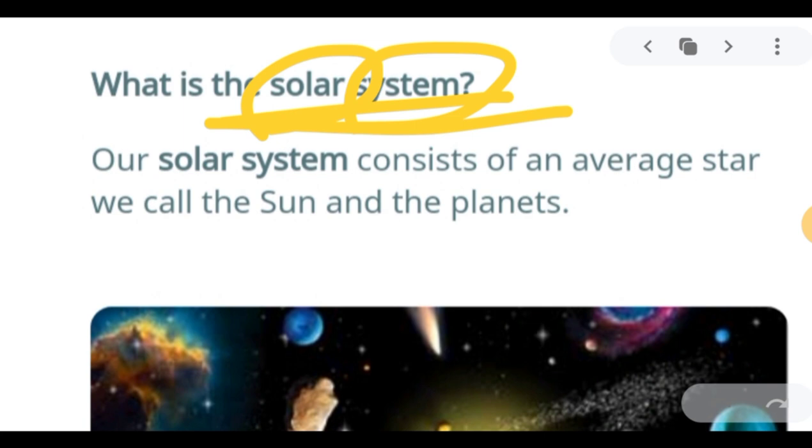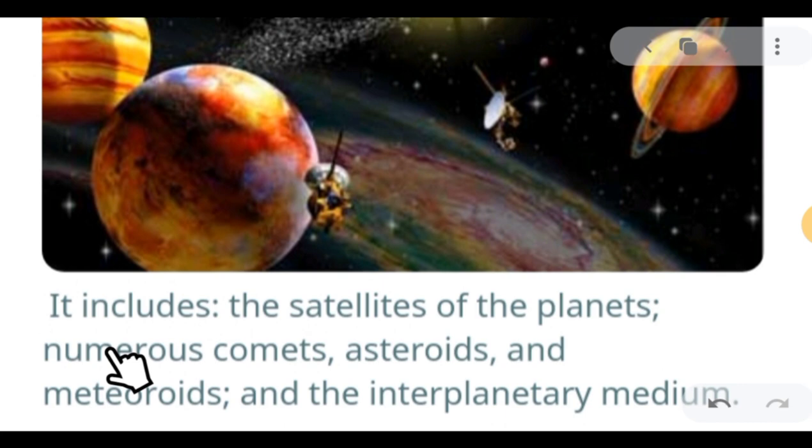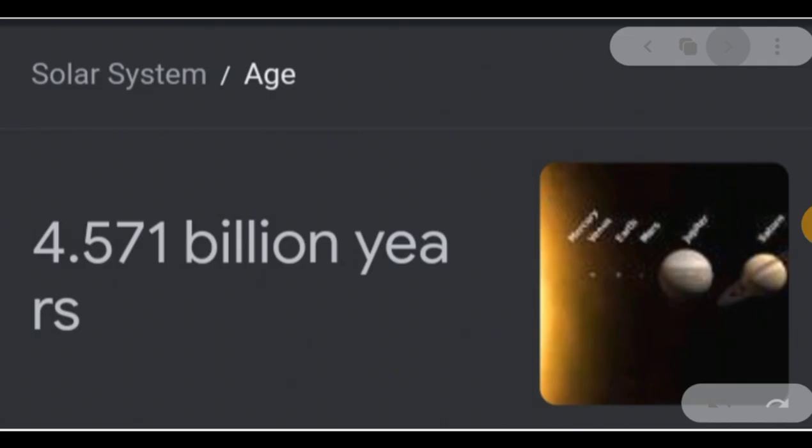This involves or consists of the sun and the planets, comets, meteorites, among other heavenly or cosmological bodies. Our solar system consists of an average star we call the sun and the planets. It includes the satellites of the planets like the moon, natural satellites, numerous comets, asteroids, meteorites, and the interplanetary medium. The age of our solar system is 4.571 billion years.